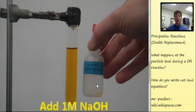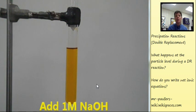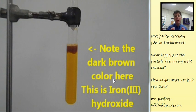Next we're going to be adding our other reactant. We're going to add one molar sodium hydroxide. So just add that drop by drop and you can see forming right up here a precipitate. This dark brown color. This is iron 3-hydroxide forming.